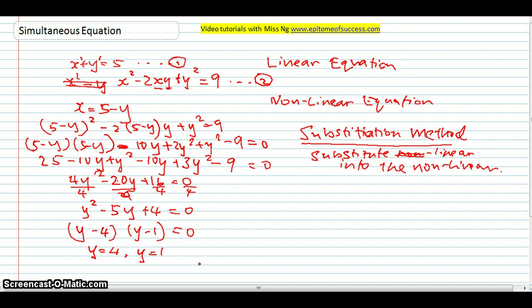Now, please remember, a lot of students, when they come to this point, they're very happy. Finish already. y is 4, y is 1. They forget that they're supposed to find x as well. You will have two pairs of answers. Please remember this. Two pairs of answers. So now, write when y is 4. So what is x? Put it into this equation. This one, this one. Because it's directly x equals to 5 minus y.